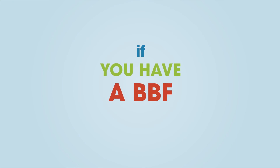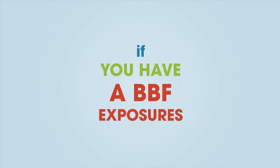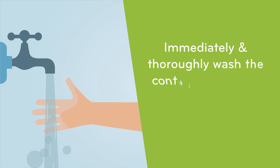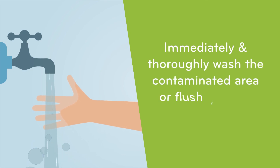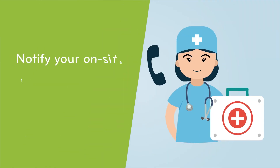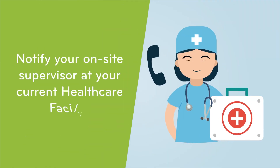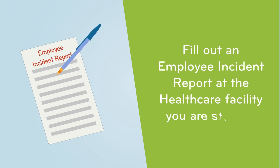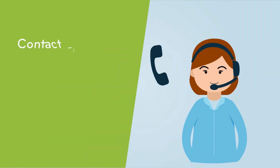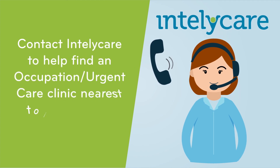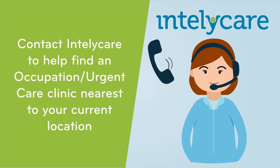If you have a blood and body fluid exposure, the most important steps include: first, immediately and thoroughly wash the contaminated area or flush mucous membranes with water; second, notify your on-site supervisor at your current healthcare facility; third, fill out an employee incident report at the healthcare facility you are staffing; and contact IntelliCare to help find an occupational or urgent care clinic nearest to your current location.